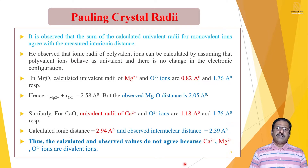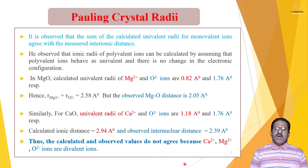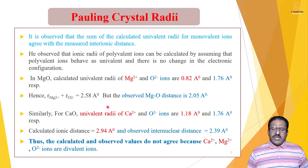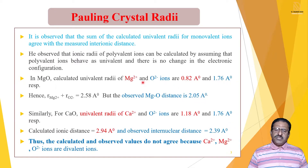Taking the example of MgO, the calculated univalent radii of Mg²⁺ and O²⁻ ions are: Mg²⁺ radius is 0.82 Ångström, and O²⁻ radius is 1.76 Ångström. By calculation, we get the internuclear distance. The observed MgO distance is 2.05 Å, but the calculated internuclear distance is 2.58 Å.